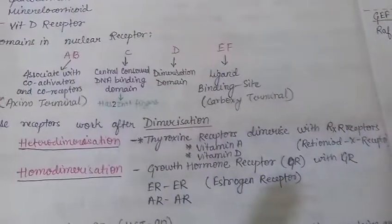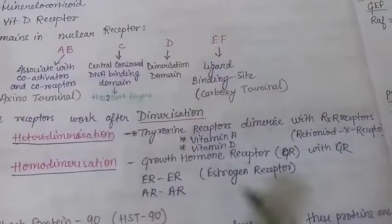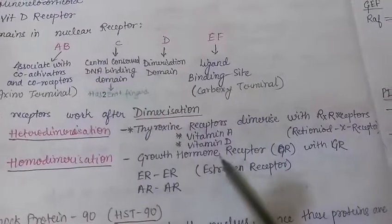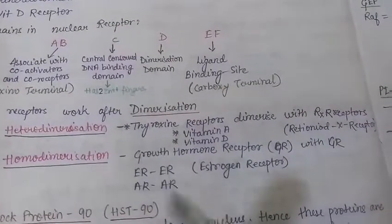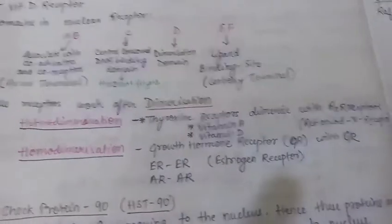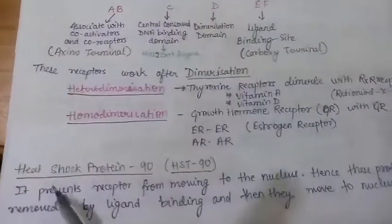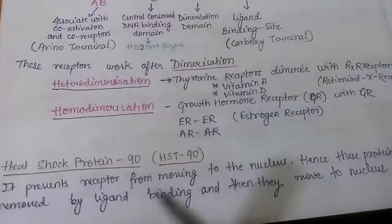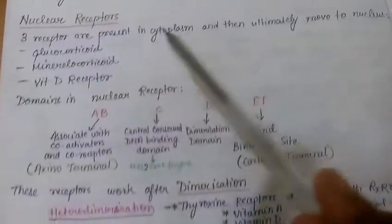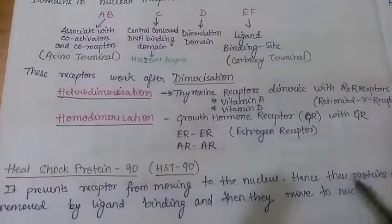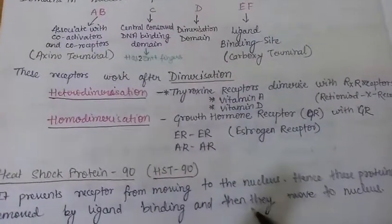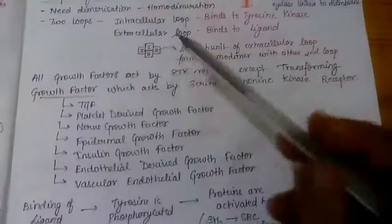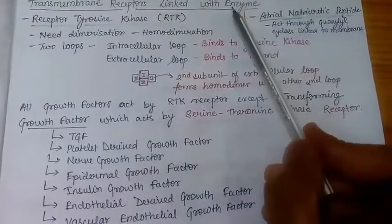Homodimerization is seen in the growth hormone receptor, glucocorticoid receptor (GR dimerizes with GR), estrogen receptor (ER with ER), and androgen receptor (AR with AR). An important point: heat shock protein generally prevents movement of the receptor from cytoplasm to nucleus. When a ligand binds to these receptors, the heat shock protein is removed and the receptor moves from cytoplasm to nucleus.